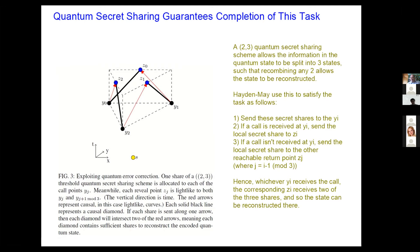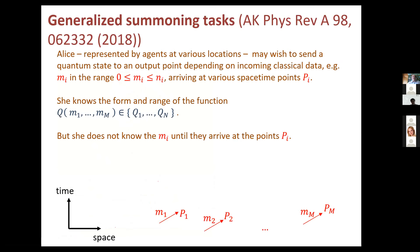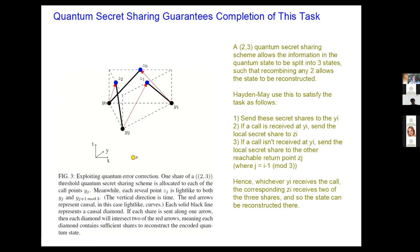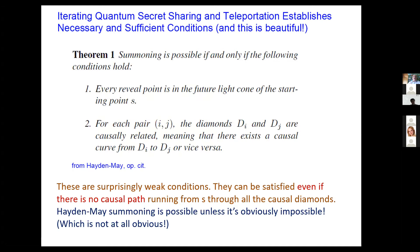Every situation covered by the theorem allows the task to be satisfied. The spirit of the proof is that you just need a combination of quantum teleportation, quantum secret sharing, and an iterative algorithm that breaks the task down into sub-tasks. Beautifully, it all fits together: whenever there isn't a knockdown argument that says something is clearly impossible, it turns out to be possible. It may need a lot of resources, but it's doable.